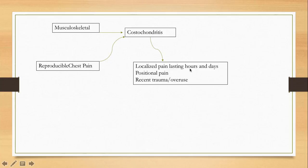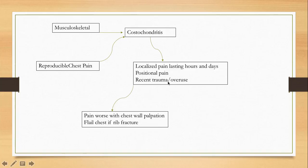This is a very positional chest pain — patients may say the pain worsens when they lay down a certain way, bend over, or reach to do something. There is usually a history of either overuse or trauma. When you probe the patient further, you will get this story.